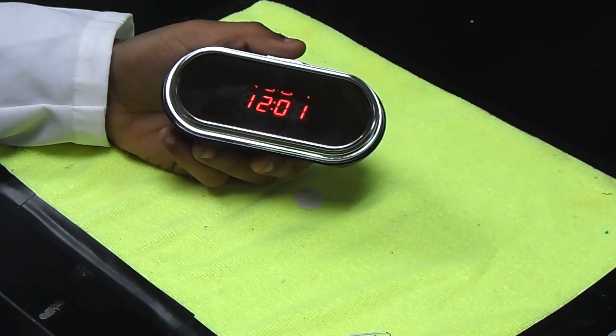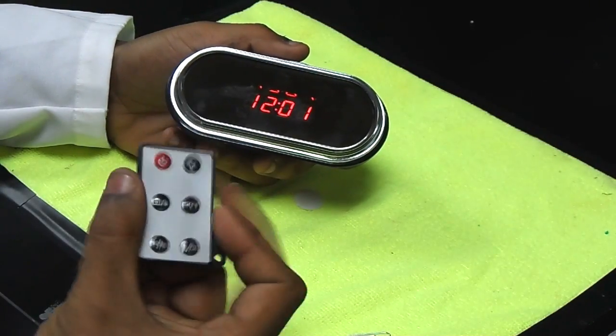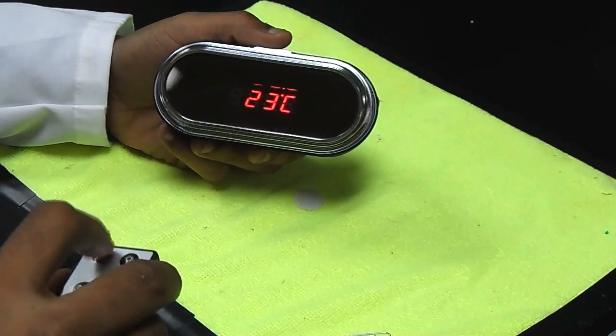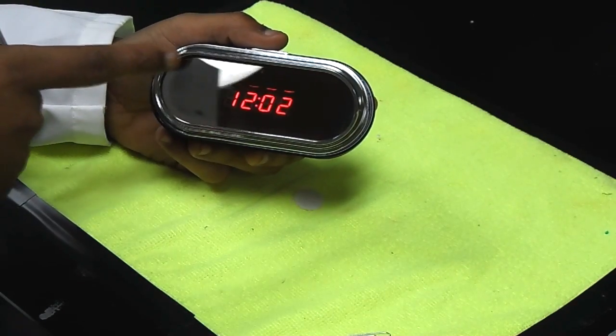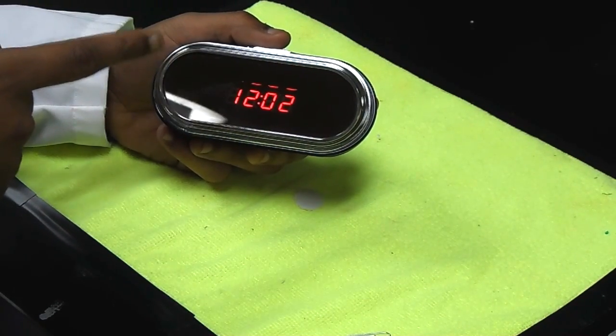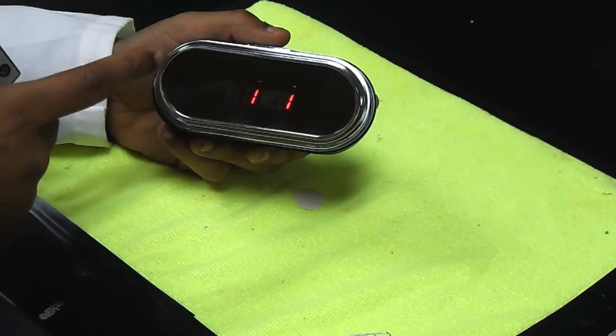Now simply press the power button on the remote one time and you'll notice that the indicator light in the top left hand corner of the clock has come on and it's remaining solid blue.